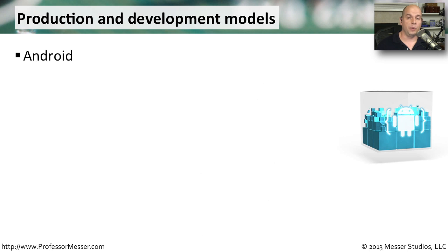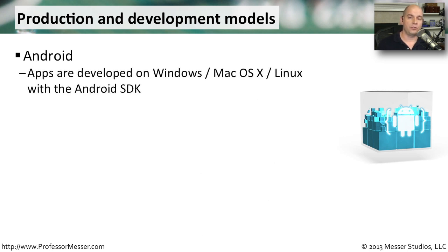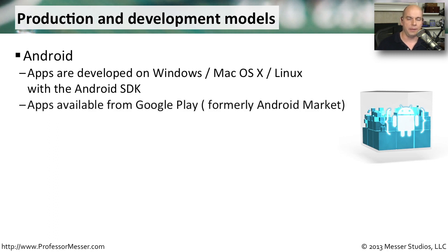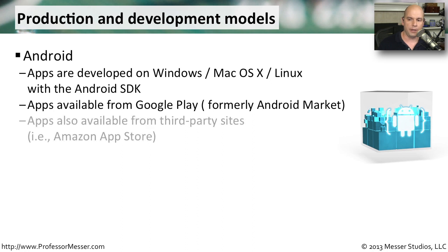If you're a developer wanting to create applications for the Android operating system, you need the Android Software Developers Kit, or SDK. You can build these applications on Windows, Mac OS X, or Linux — there are different versions of the SDK that you can run in almost any operating system. Once you create the applications, you can make them available for download or sale in an online service called Google Play, which used to be called the Android Market.